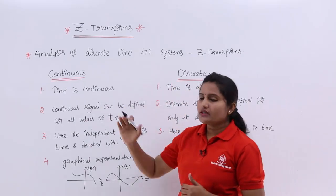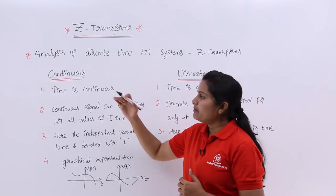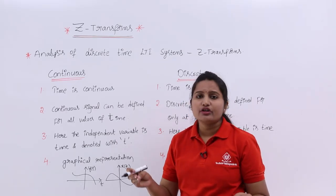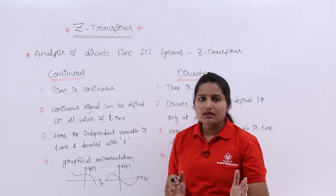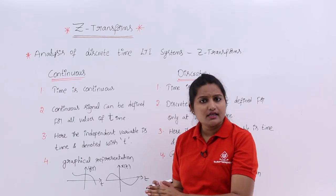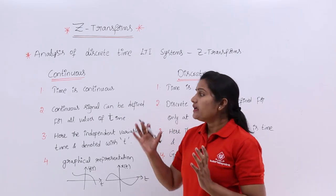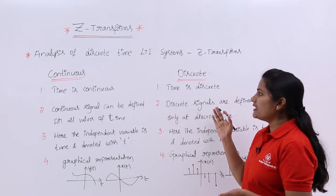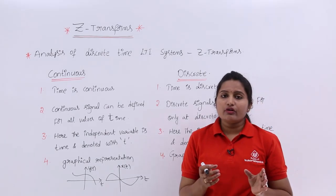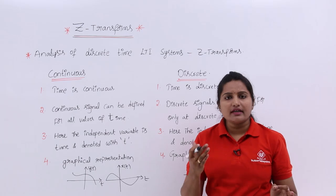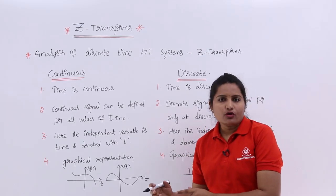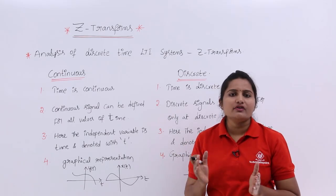Coming to continuous time system or signal — time is continuous here, it is not going to cut anywhere. So 1 is there, 1.1 is there, 1.2 is there, 1.001 is there, 1.002 is there — time is continuous. Whereas in a discrete time system, time is discrete. You get values at one time period, then at 2, 3, 4 — only at integer values you are going to have your signal value.